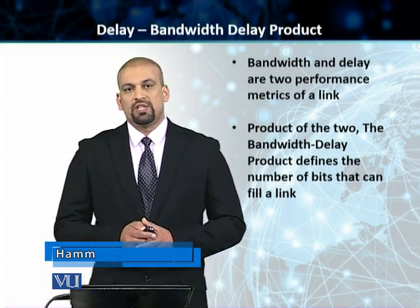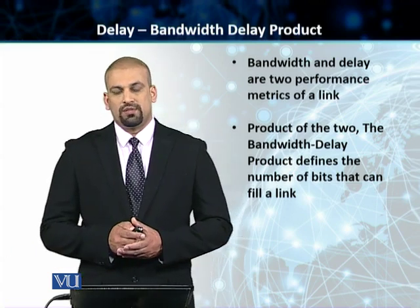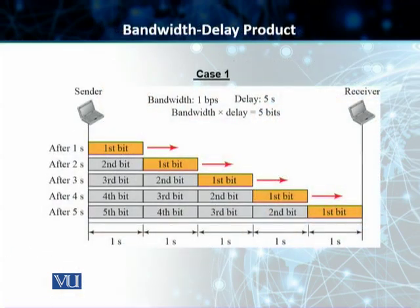Let's go to the slide and have a look at a couple of examples. In the first example, we have a link with a bandwidth of one bit per second — this is an example link; we don't have many links where the bandwidth is one bit per second. We also assume the delay of the link is five seconds. The bandwidth delay product is one multiplied by five, which is five bits.